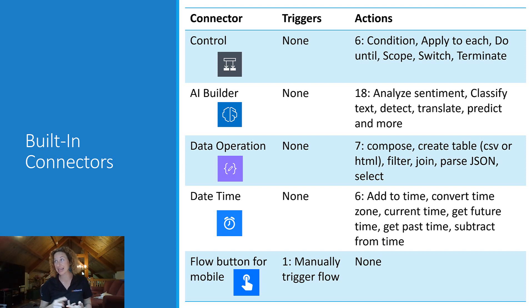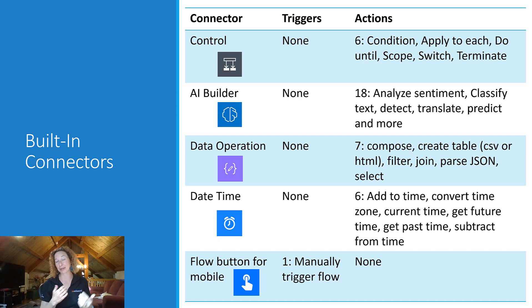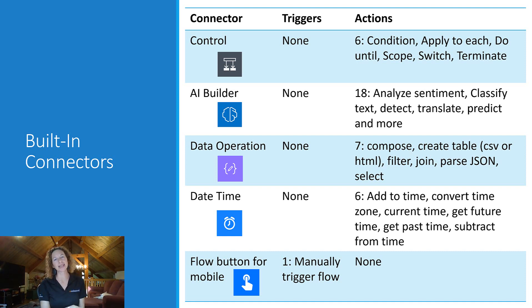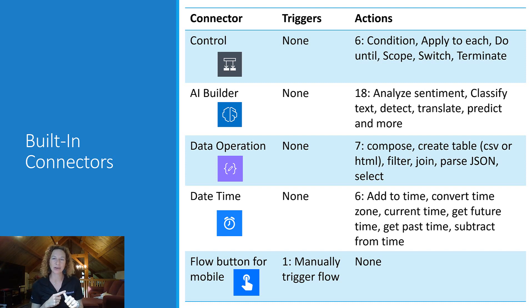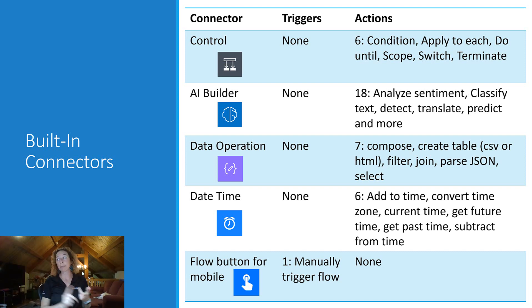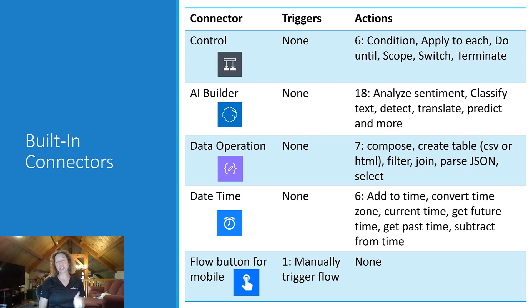We'll go one by one: what the connector is, a count of the triggers and actions, and any other little tidbits along the way. First up is Control. I use this one a lot and you probably do as well. There are no triggers on this, but there are six extremely valuable actions: Condition, which I use all the time — if this, follow the left path; if that, follow the right path. Apply to Each, also used a lot. Do Until, Scope, Switch, and Terminate.